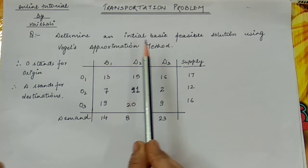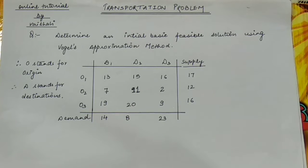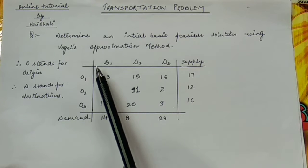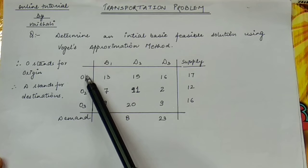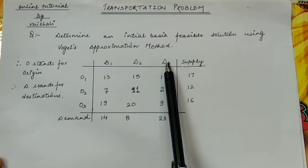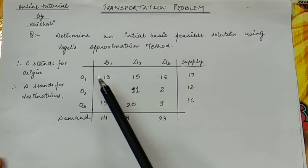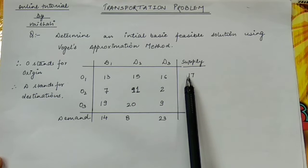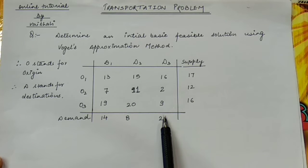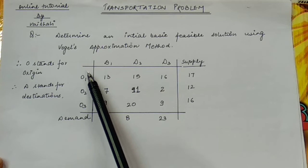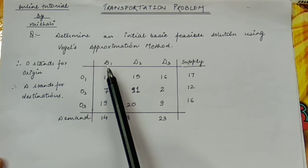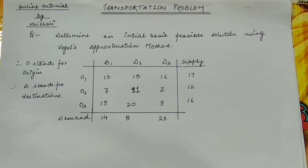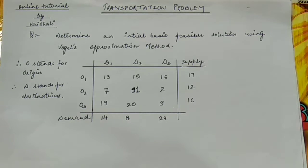This is the given problem. Determine an initial basic feasible solution using the Vogel approximation method. O stands for origin — O1, O2, O3 are origins. D1, D2, D3 are destinations. These are the cost values, these are the supplies, and these are the demand values. The first step is to check whether the problem is a balanced transportation problem.